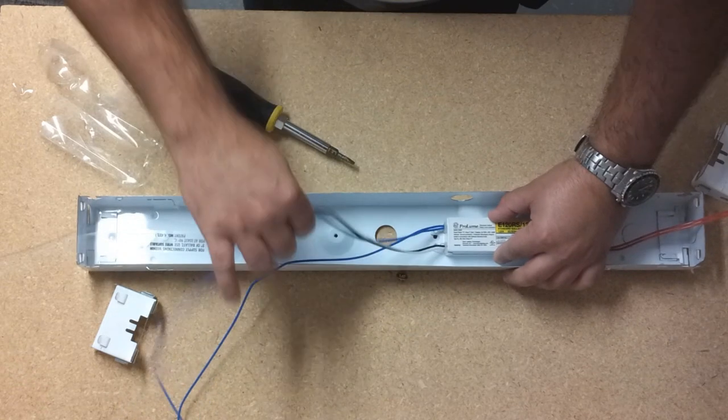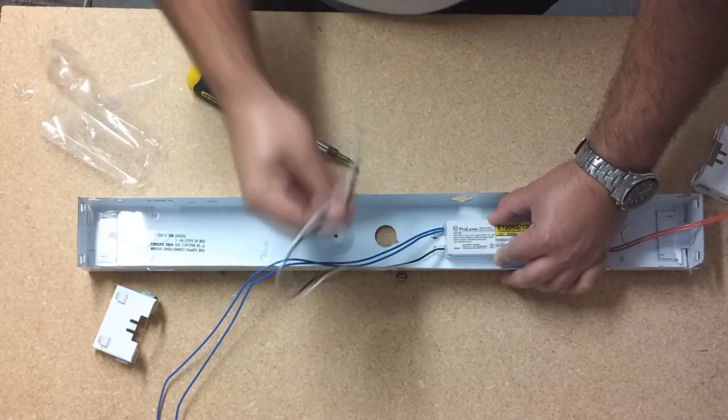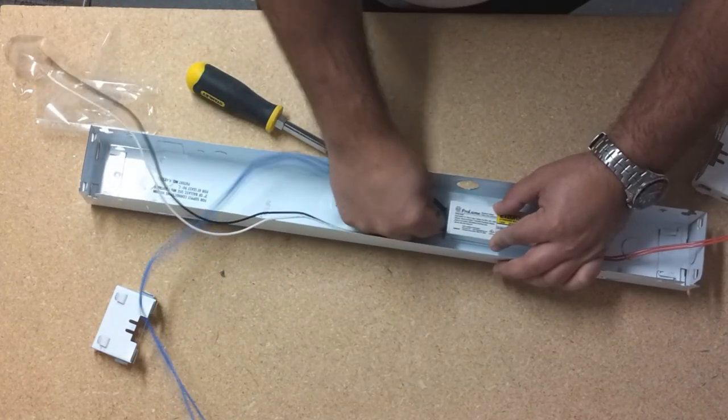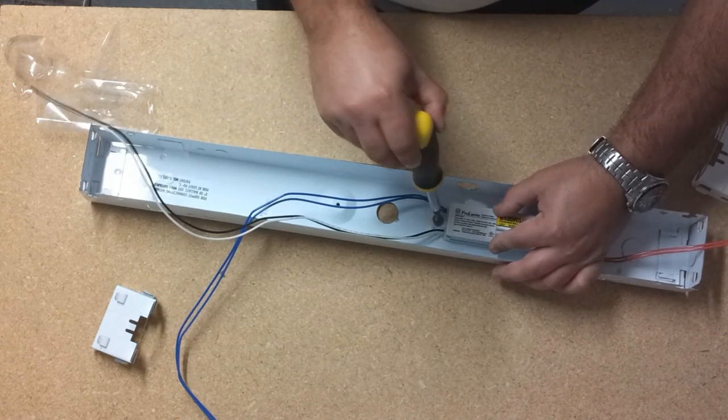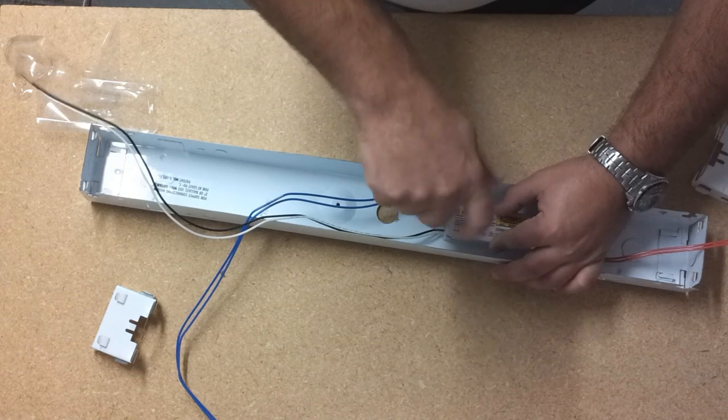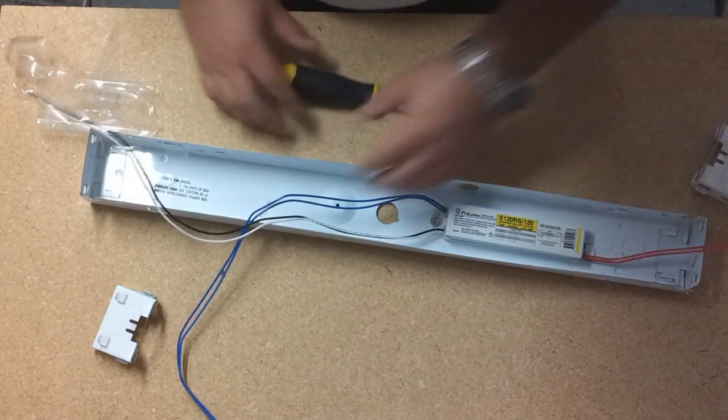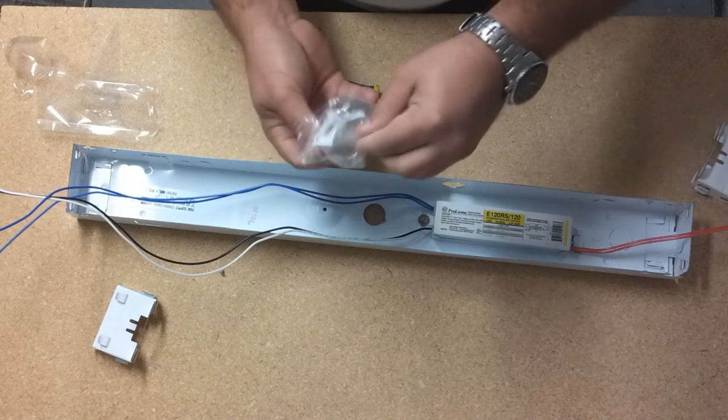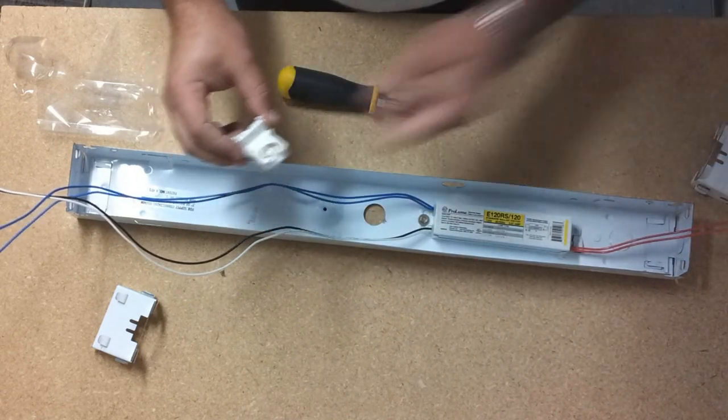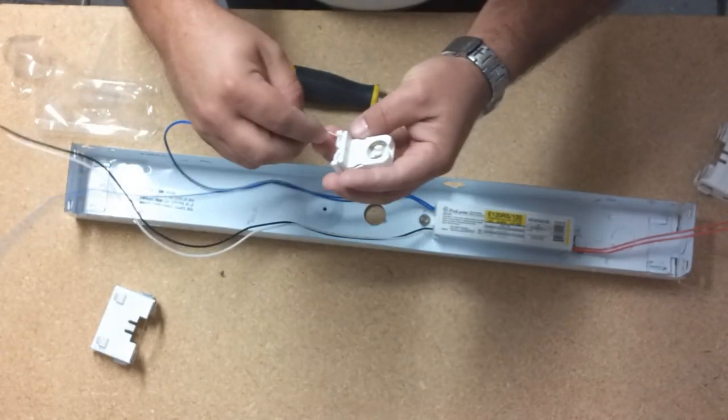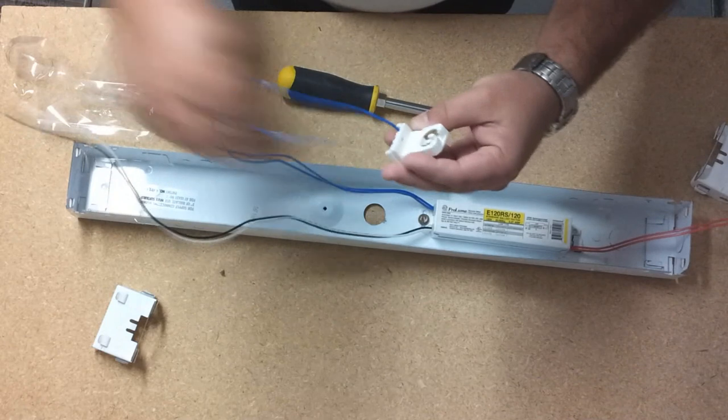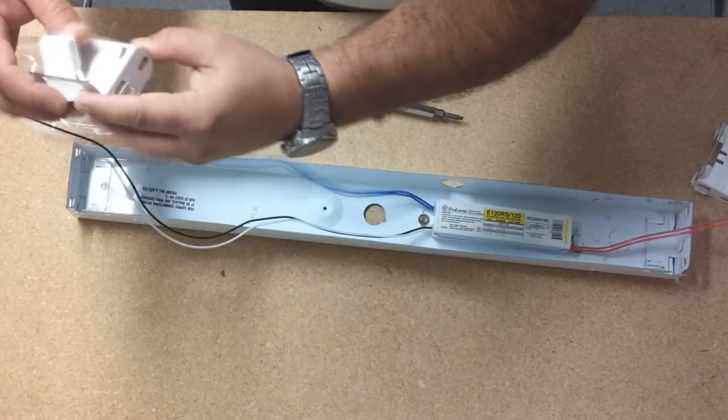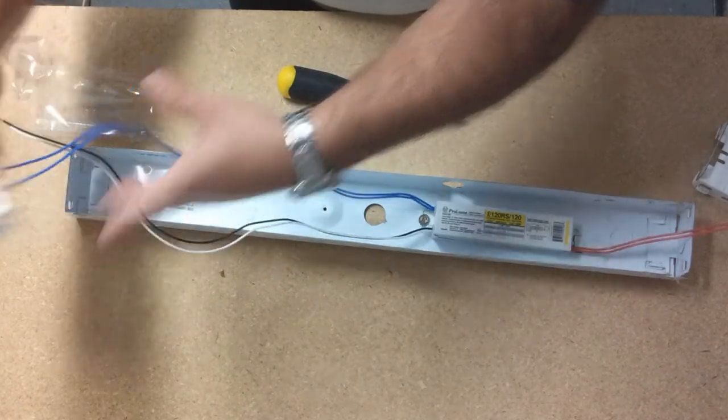We're going to put it in this position because we're going to run the power down here. We're going to put the screw back, nice and tight. I got two wire nuts just in case. Two blue wires, one in - perfect.